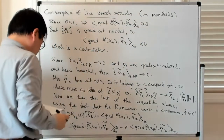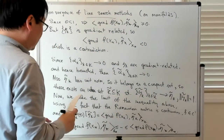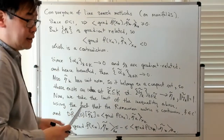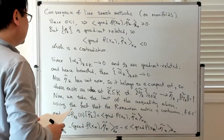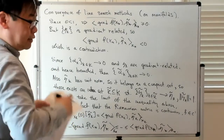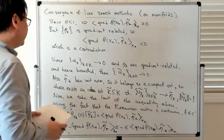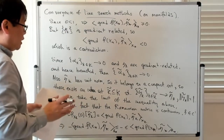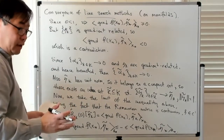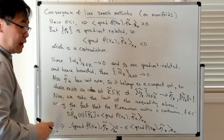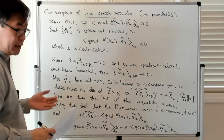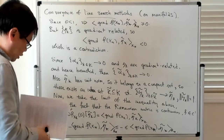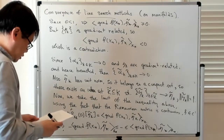So again, what that tells you is that if you look at the sequence of iterates generated by this line search algorithm developed on manifolds, then all the accumulation points are going to be such that the gradient of f at those accumulation points vanishes.